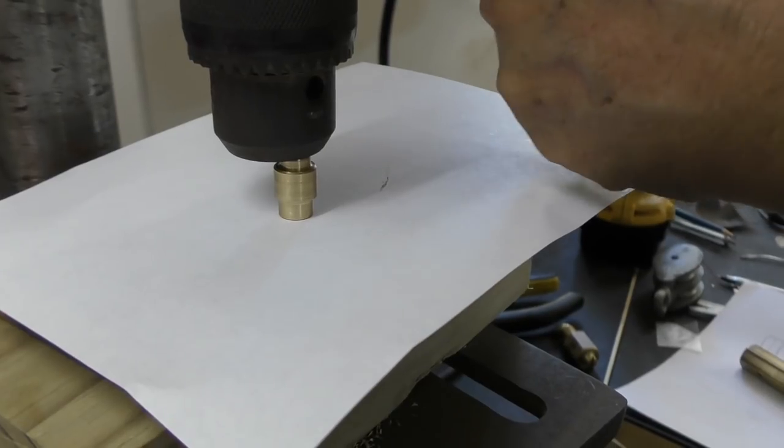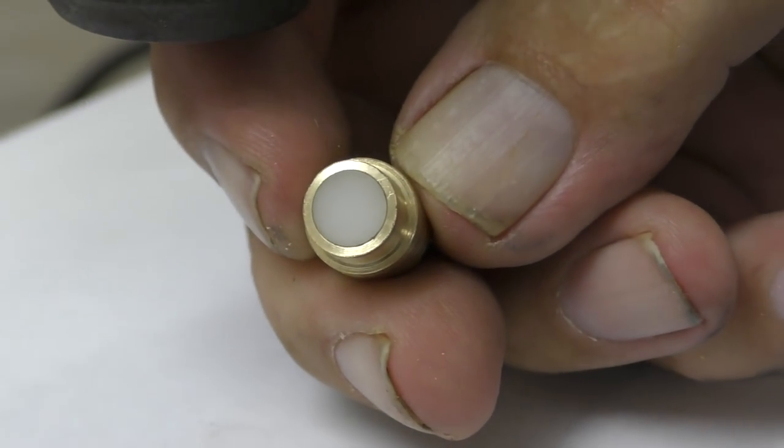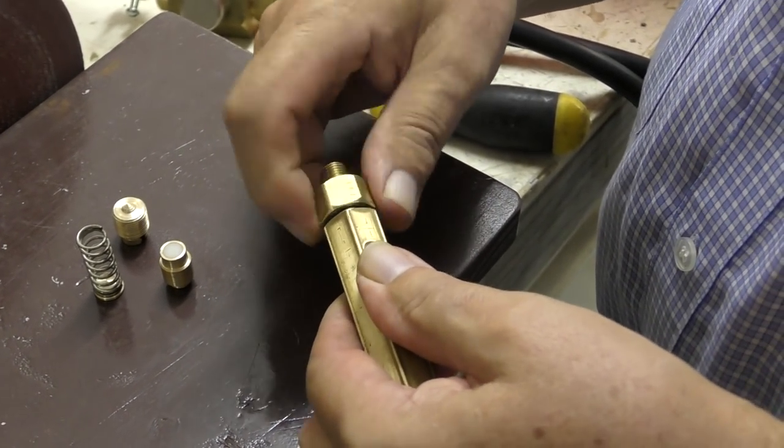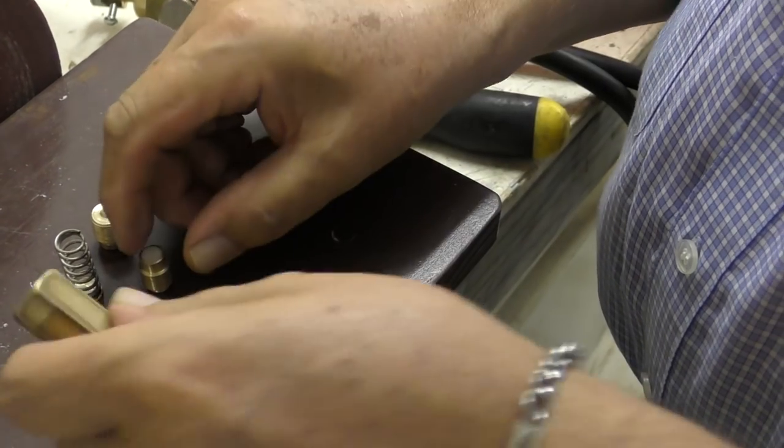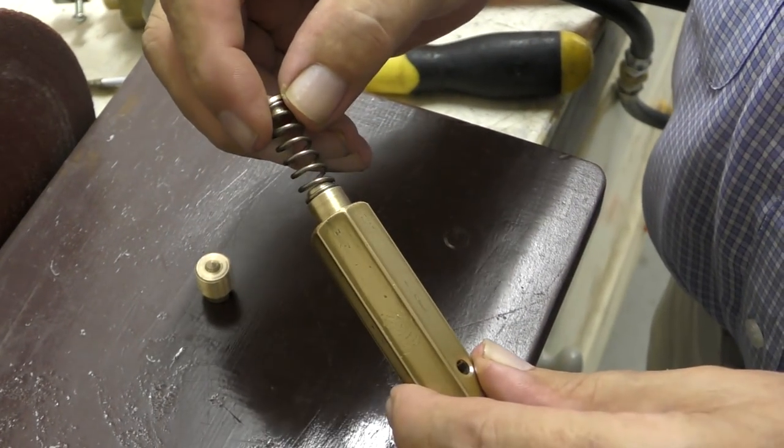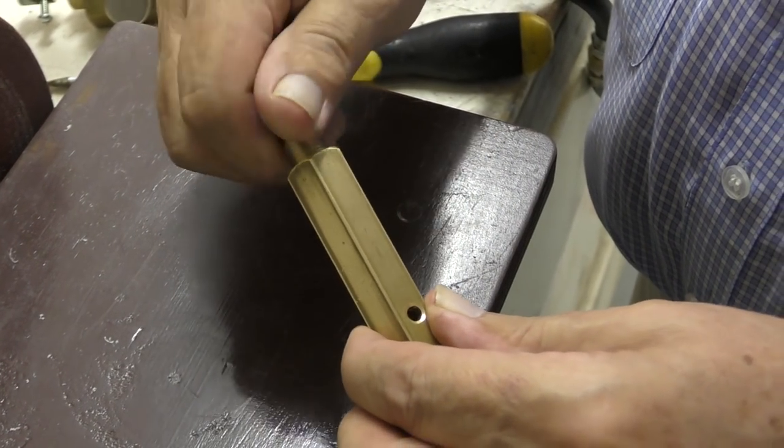Here we're pressing a nylon seal into the seat. This is what the orifice seals against. Behind the seat is a spring and behind it is an adjustment screw. The pressure above which it leaks is adjustable and for this project we've set it to around 80 bar.